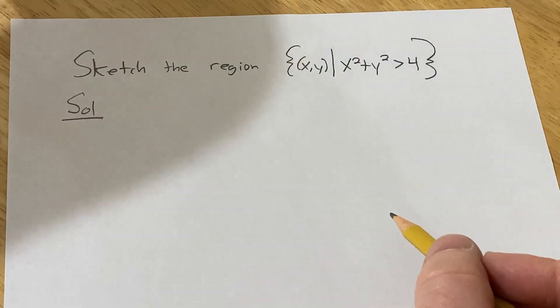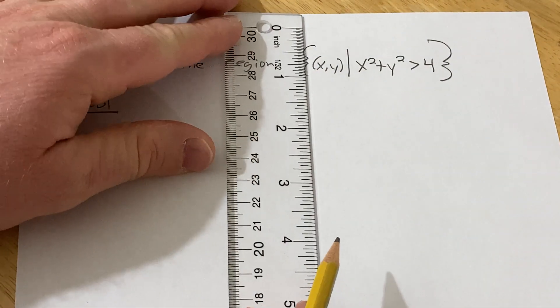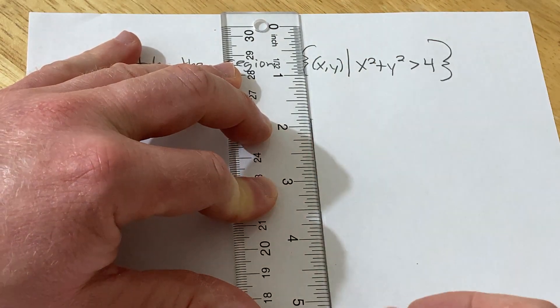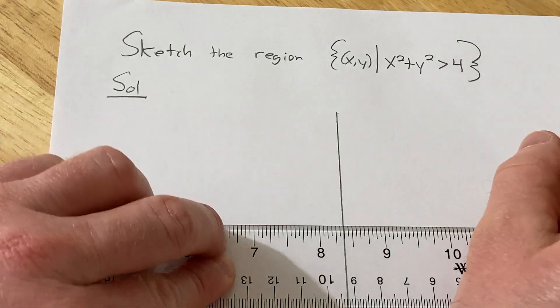So the first thing I'm going to do is draw a picture of the xy-plane. I have my ruler here and I'm just going to do a rough xy-plane picture. So there's the y-axis and then here is the x-axis.